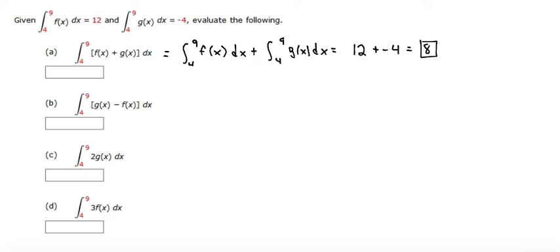For part b, we have g of x minus f of x. We can write that as the integral from 4 to 9 of g of x dx, and then because it's a minus in the problem, we can do minus the integral from 4 to 9 of f of x dx.